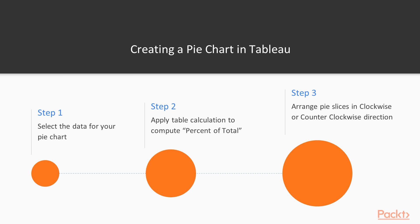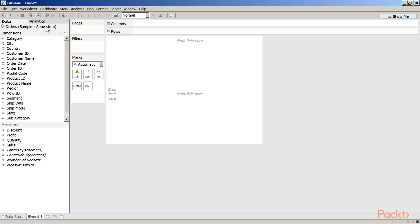We are working with a sample superstore Excel file that is provided by Tableau. If you work with licensed Tableau Desktop edition, however, if you are working with Tableau Public, you can download sample superstore Excel file from the Tableau community. Select pie in the marks card. Notice that angle is added as another feature in the marks card.